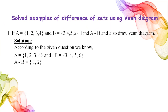The solution: we write set A and then set B, keeping in mind that we need elements which are in A but not in B. The answer is 1 and 2. We do not write 3 and 4 because those elements are also present in set B.